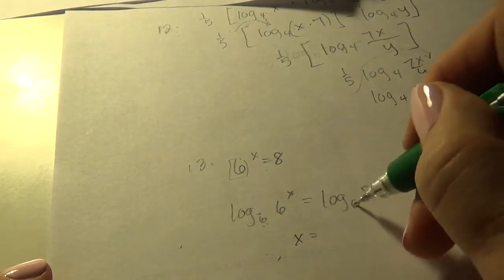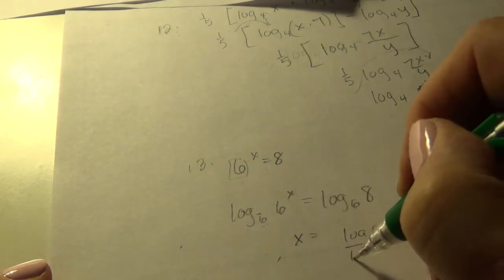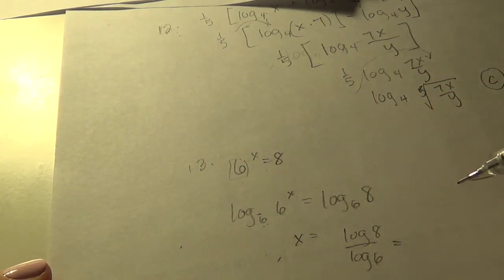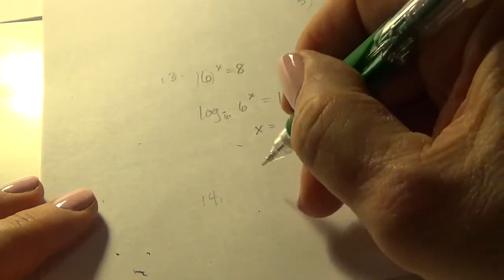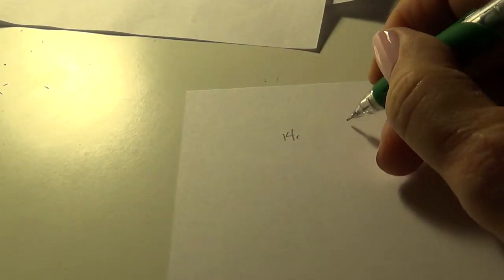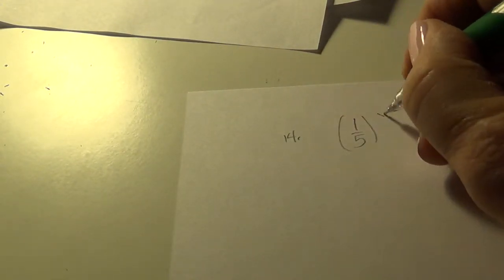So now we know how to do this. It's the change of base formula. So I think when I plug that in, I'm going to get 1.86, which is letter E. Alright, number 14. We're going to solve this equation. Let me get another piece of paper here.